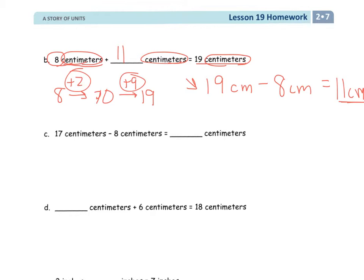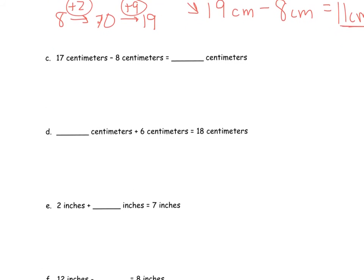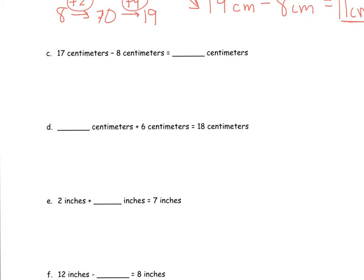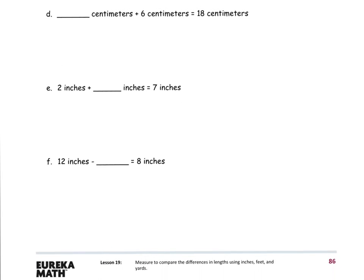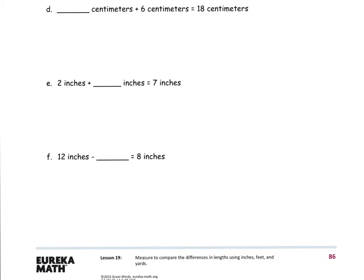We'll do one more. Let's look at F—I just did one for addition, so let's do a subtraction one. 12, which is my whole, I have to subtract something from it to get 8. So 12 minus something is going to give me 8.